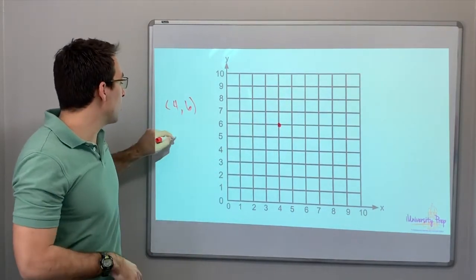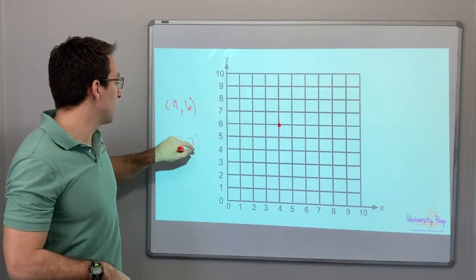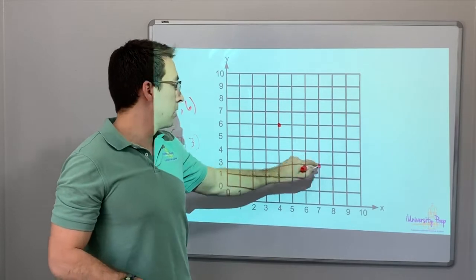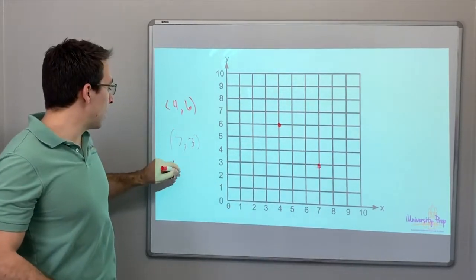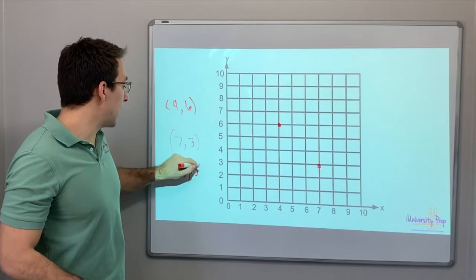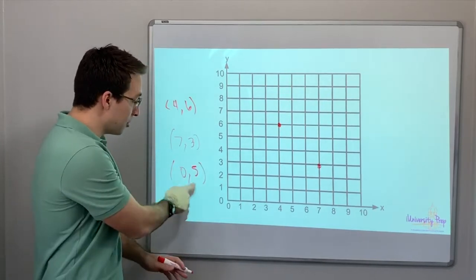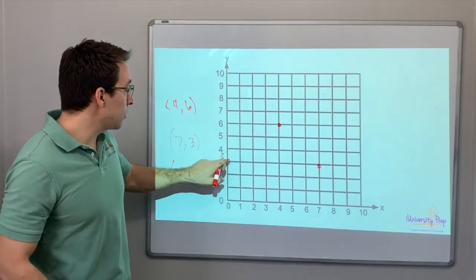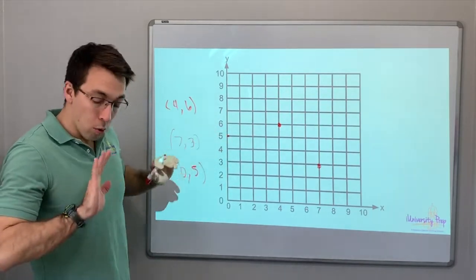All right, what about if you have 7-3? You go 7, then 3. Still, no problem. What about 0, 5? Oh, 0, you're just barely, you're at the front door. So you go 0, 1, 2, 3, 4, 5. We're good.